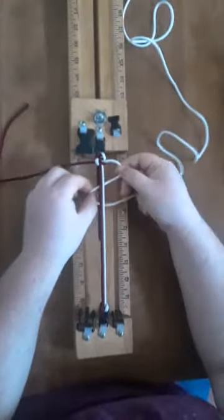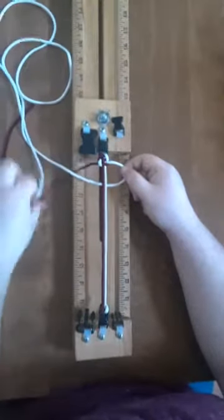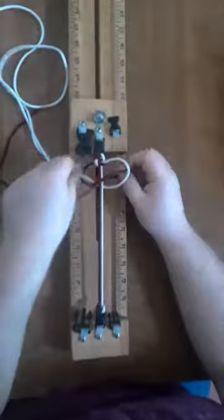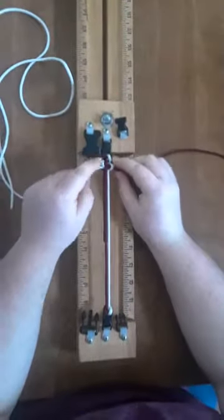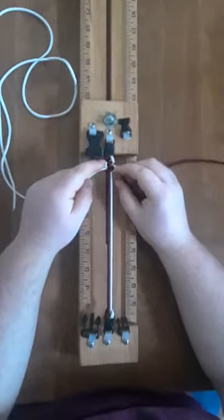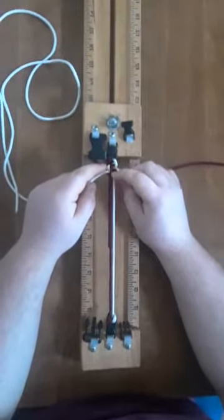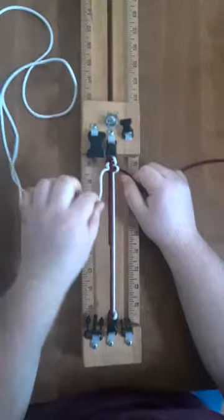And one more for good measure. White cord under, over, red cord over, over, through. And now you can start to see the pattern of the bracelet. Your white is going to be running on the outside and your red is going to be in the middle. And I'll show you how to end this in a little way.